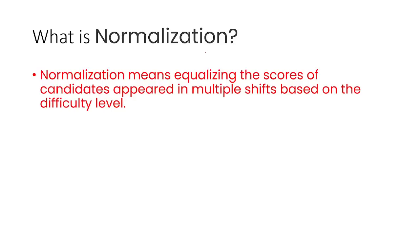Normalization means equalizing the scores of candidates who appeared in multiple shifts, based on difficulty level. If you have multiple shifts, the difficulty level will definitely change. Normalization ensures that students' scores are compared fairly. If you don't account for shift differences, it's unfair — normalization brings equality among students.